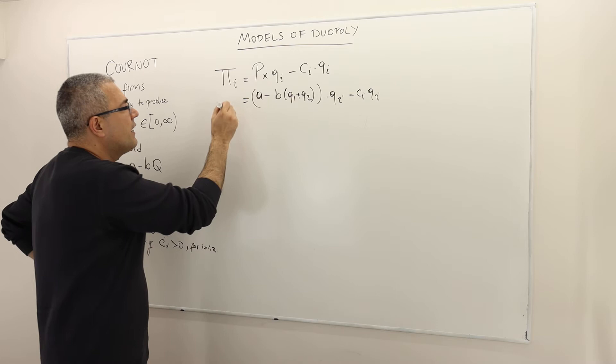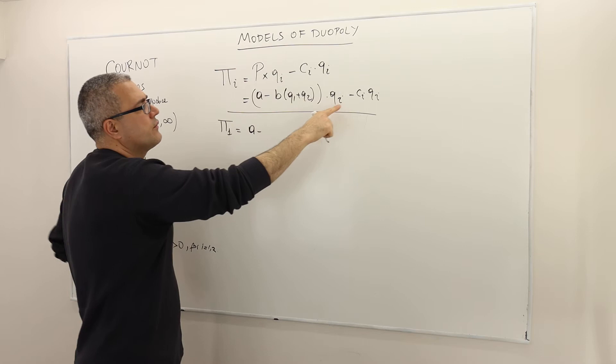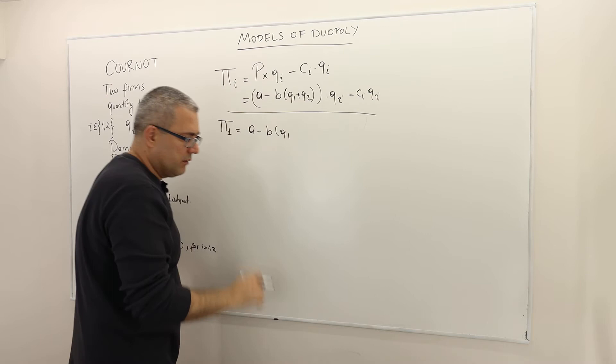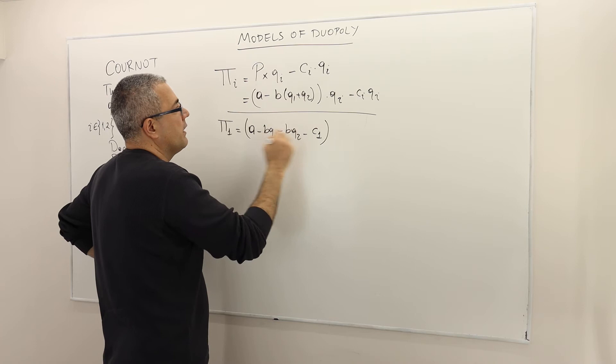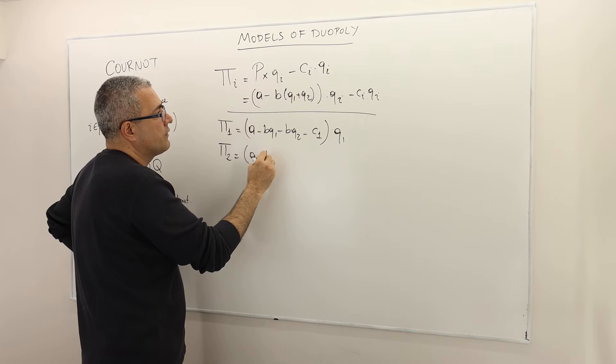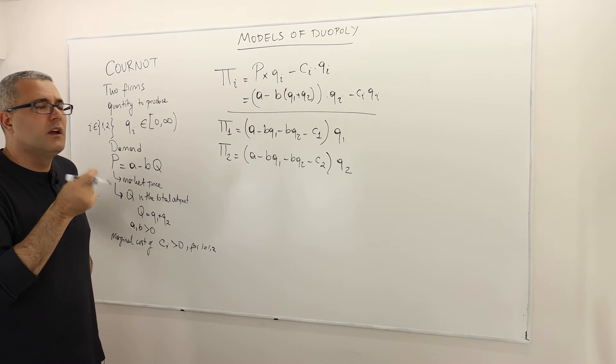To be more specific, the profit function of firm one is (A minus BQ1 minus BQ2 minus C1) multiplied by Q1. And the profit of firm two is (A minus BQ1 minus BQ2 minus C2) multiplied by Q2.